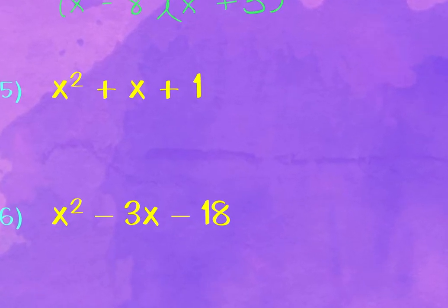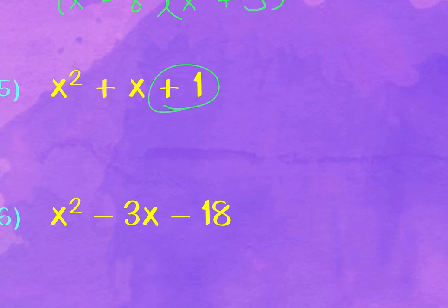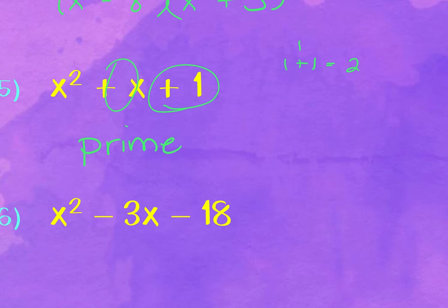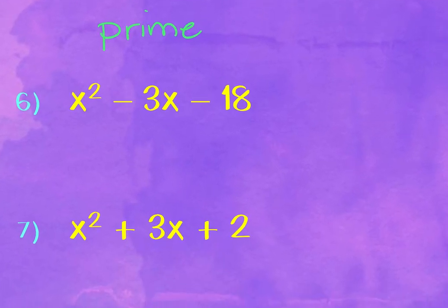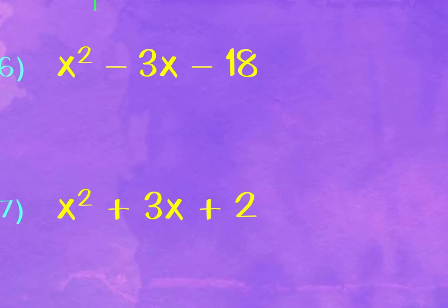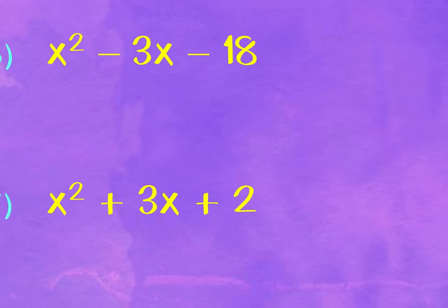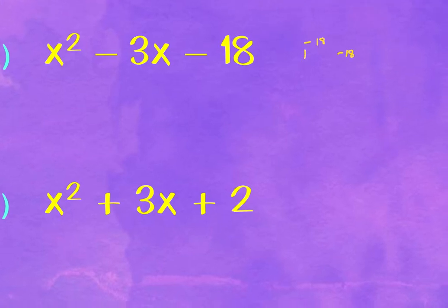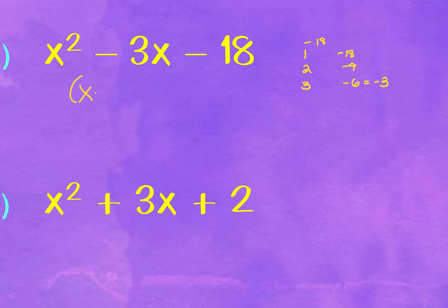Problem 5: last number is positive, middle term is positive, so both must be positive. The only factors of 1 are 1 and 1, which add up to 2 — you can never get 1, so this is prime. Problem 6, negative 18: factors are 1 & −18, 2 & −9, 3 & −6. The pair 3 & −6 gives −3 for the middle term: (x + 3)(x − 6).